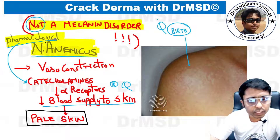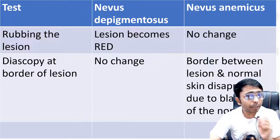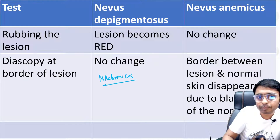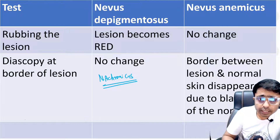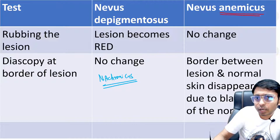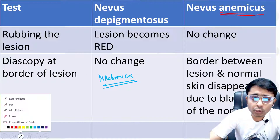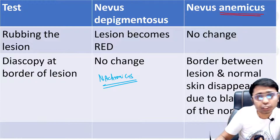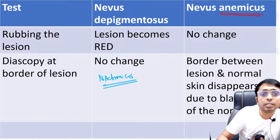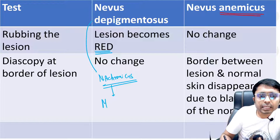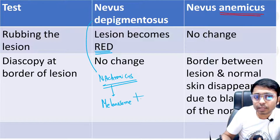This condition must be differentiated from another condition called Nevus Depigmentosis, also referred to as Nevus Achromicus — both terms refer to the same condition. These are very important differentials. In Nevus Achromicus, the skin appears pale. If you try to rub the lesions in Nevus Depigmentosis, the blood supply is normal. The basic problem in Nevus Depigmentosis or Achromicus is a defect in melanosome transfer, with no excessive catecholamine effect.